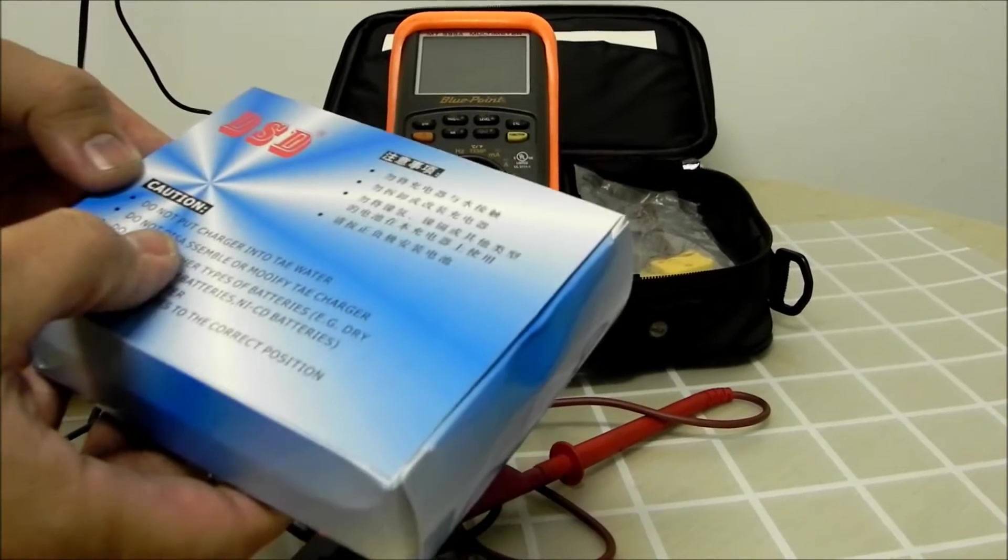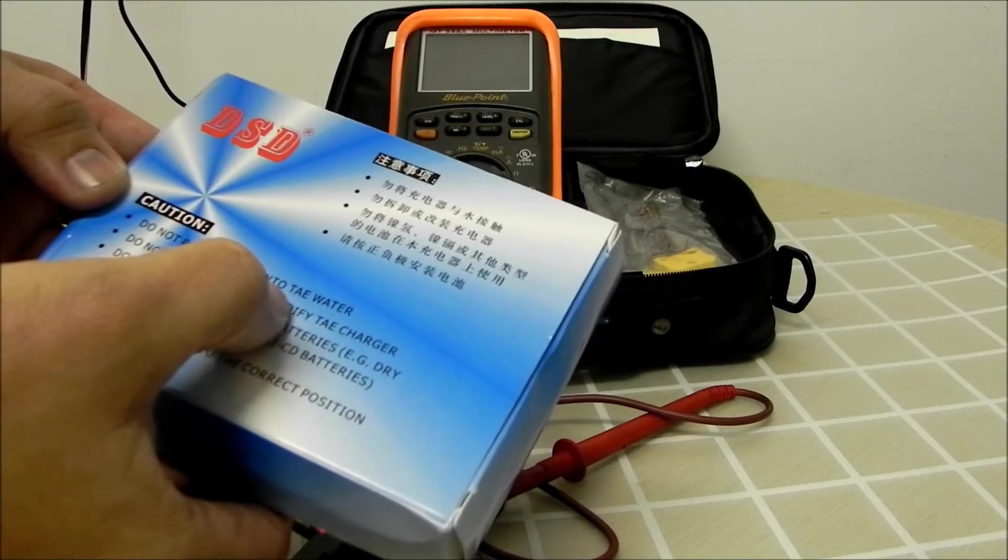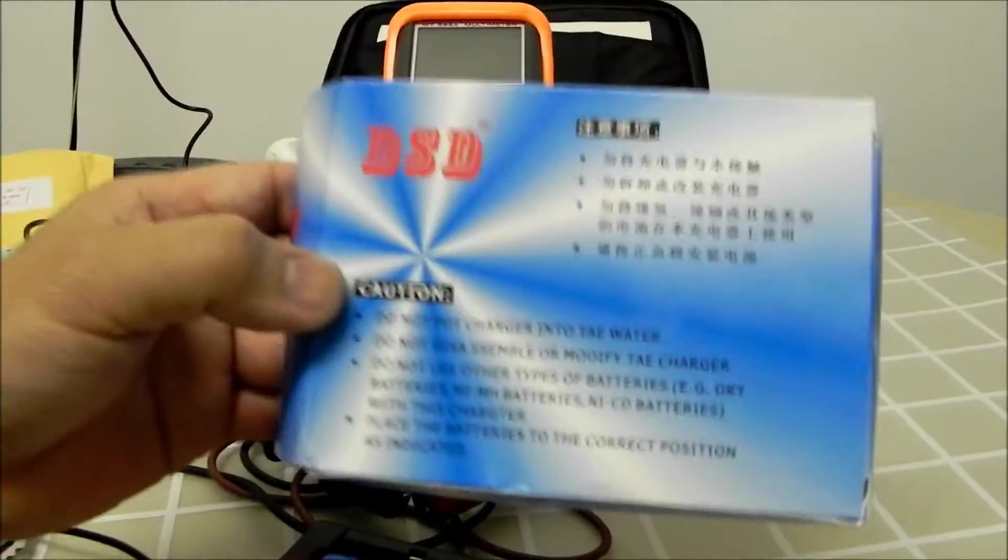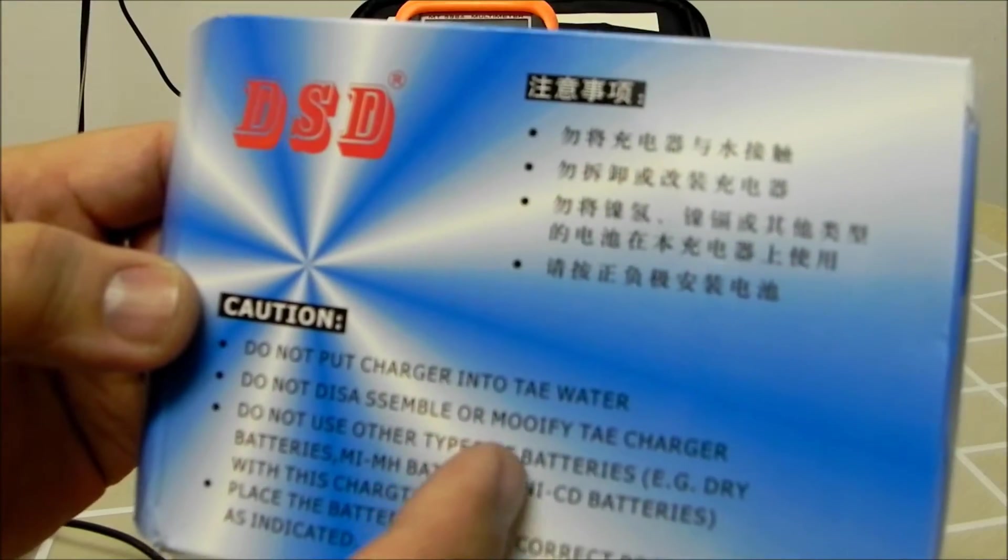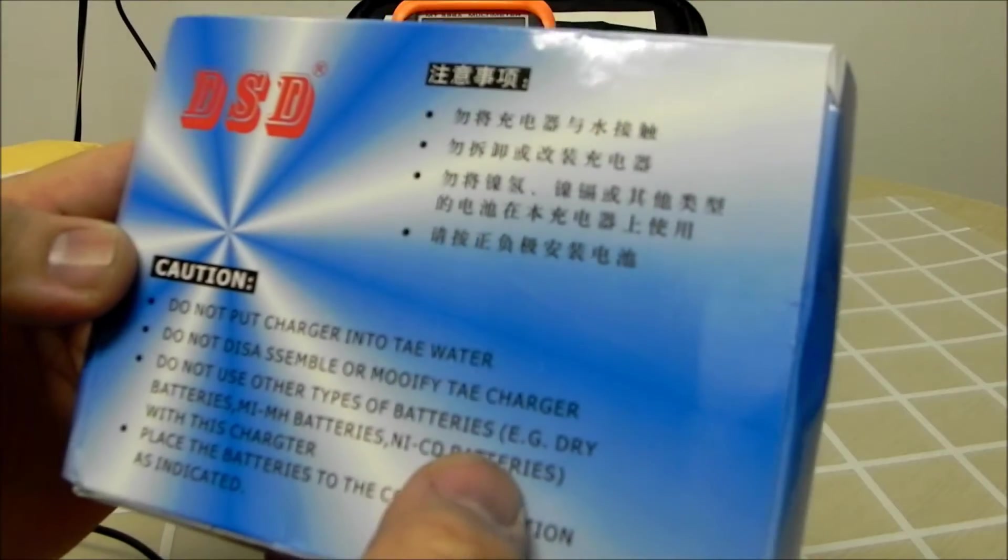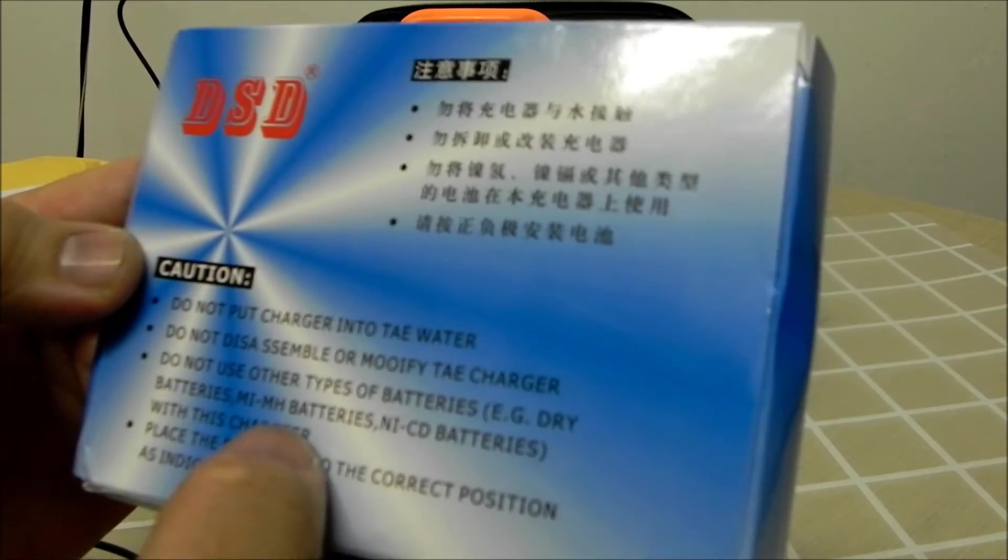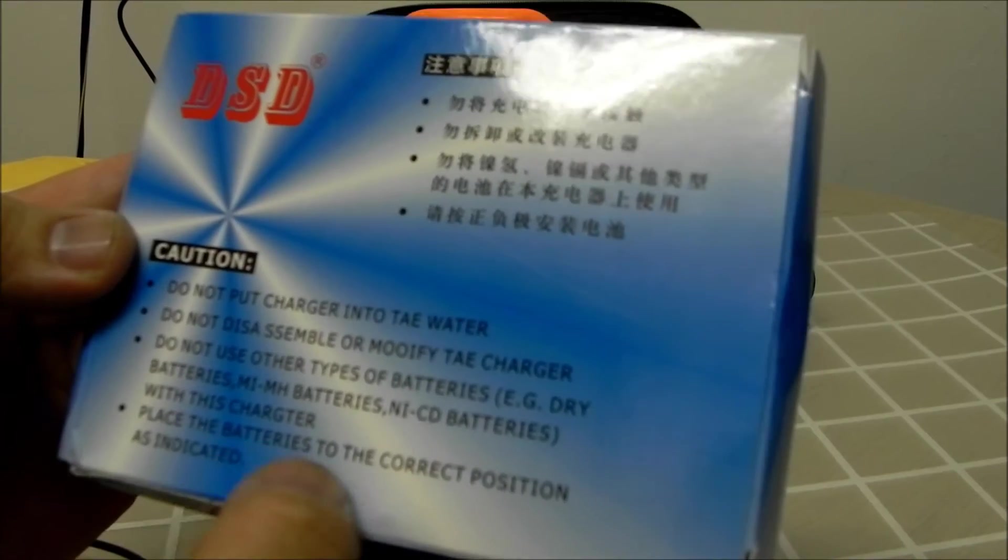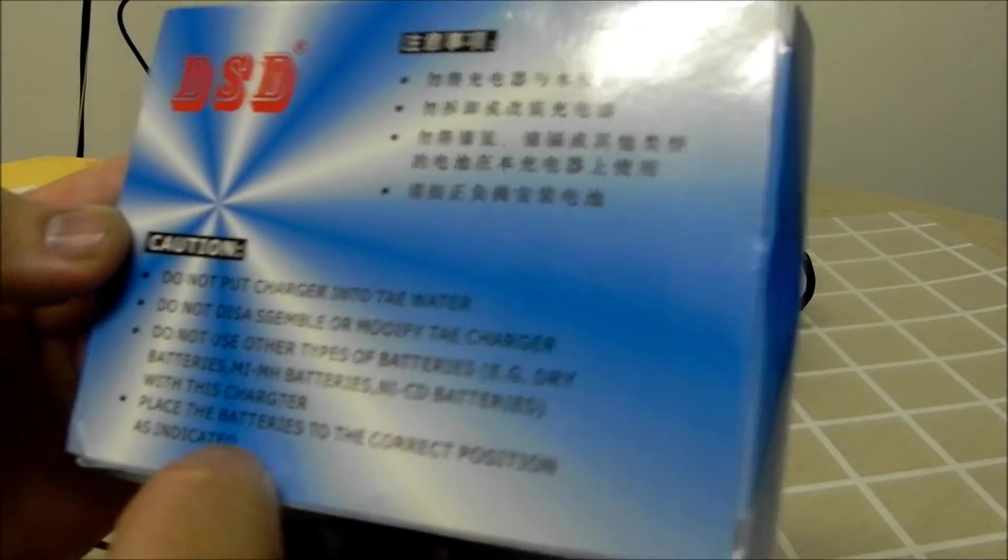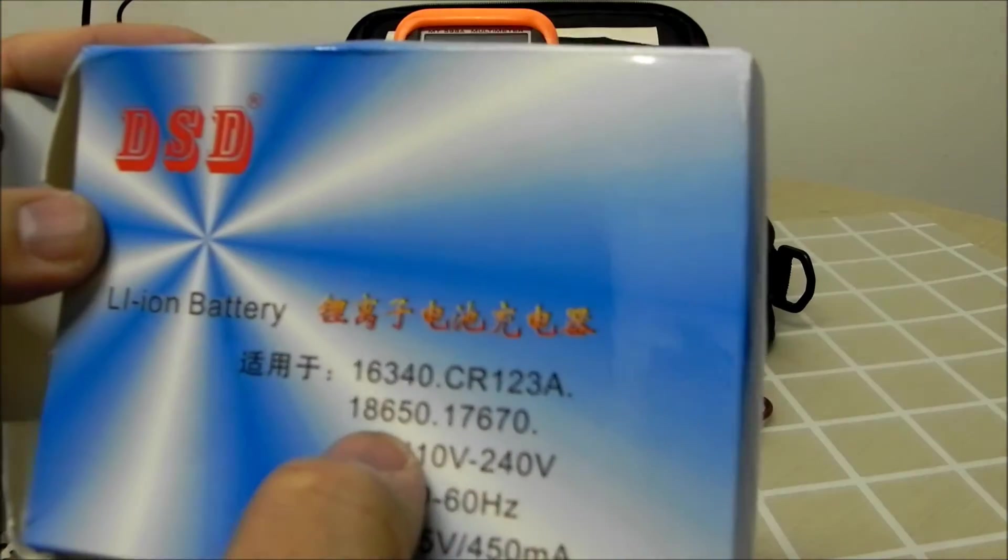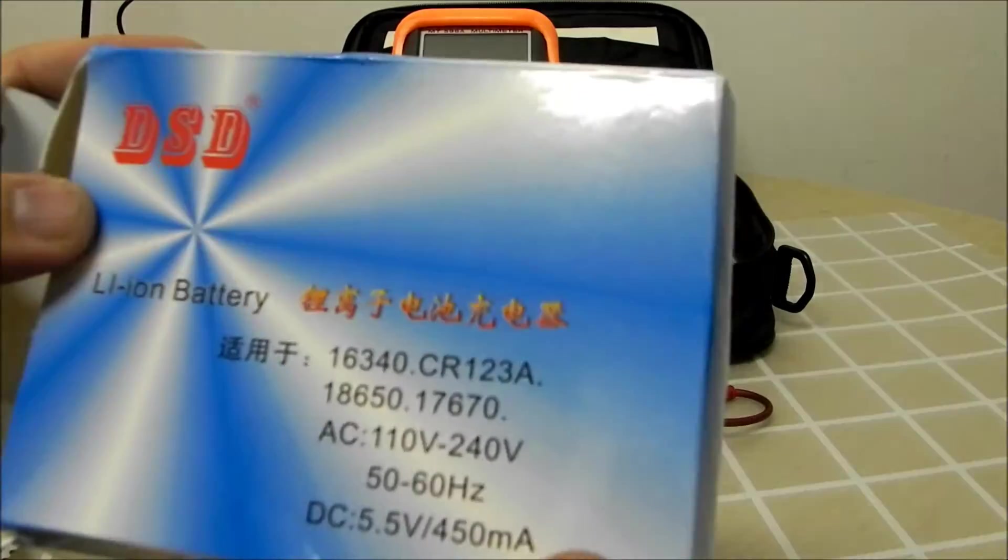There's some warnings here. Do not put charger into Tay water. I don't know what Tay water is. Do not disassemble or modify the charger. Do not use other types of batteries. Dry batteries, nickel metal hydride, nickel cadmium with this charger. Place the batteries to the correct position as indicated. DSD lithium-ion battery for 18650 batteries or CR123A.